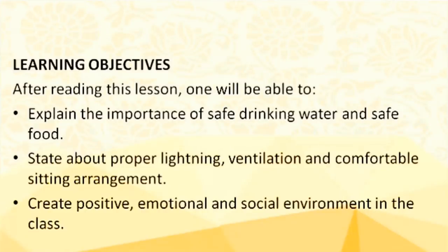Hello learners, we are here to discuss the topic of learning in art, health and physical and work education at elementary level. Today we will discuss Unit 7: School Health Education Program. The learning objectives are that after reading this lesson, the student will be able to explain the importance of safe drinking water and safe food, state about proper lighting, ventilation, and comfortable sitting arrangement, and create a positive emotional and social environment in the class.